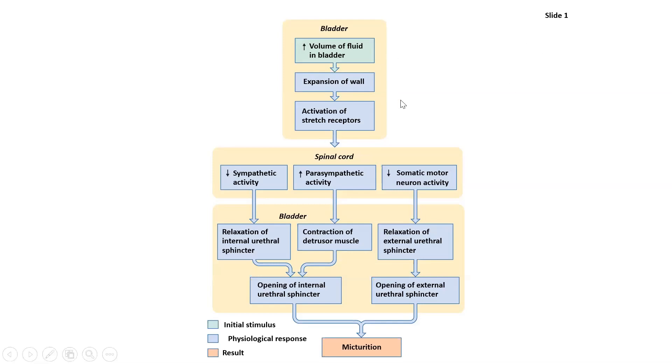There are three different divisions of the nervous system that work together in order for micturition to be successfully brought about.